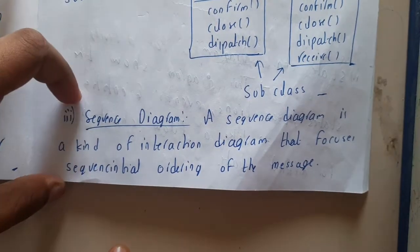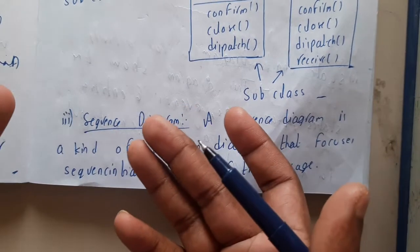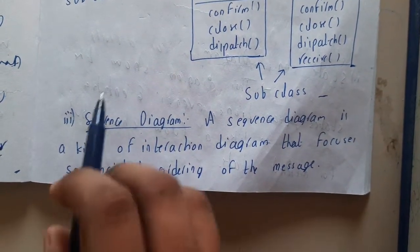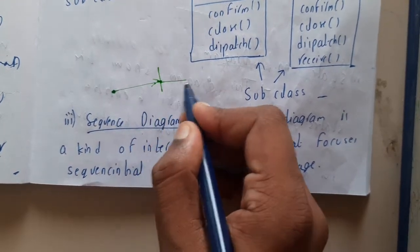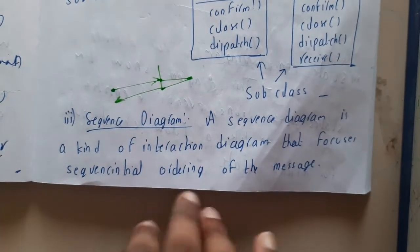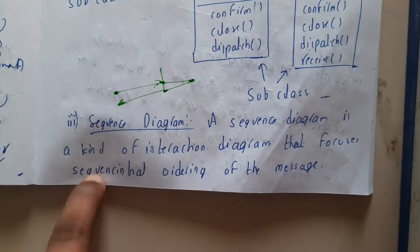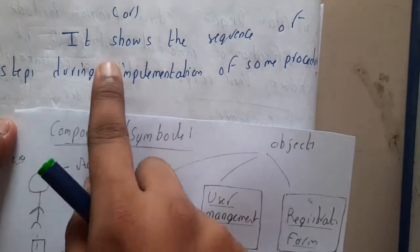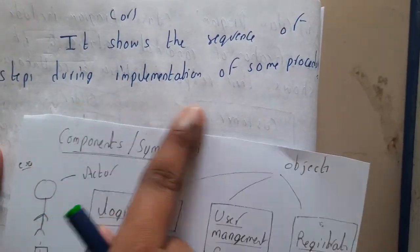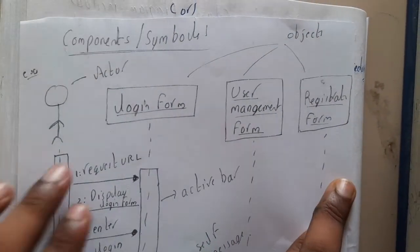The next diagram is the sequence diagram. A sequence diagram shows the interaction between components — if a message starts here, where it goes, where it hits, and where it continues. It is a kind of interaction diagram that focuses on the sequential ordering of messages — how they are sent and how everything occurs.